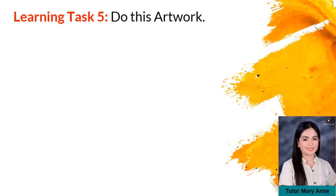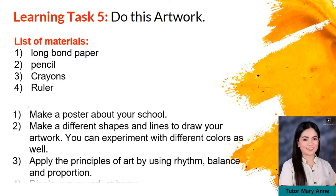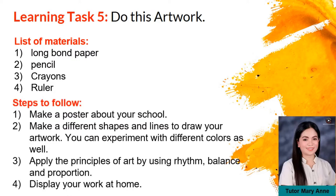For learning task 5, do this artwork. Here is the list of materials: long bond paper, pencil, crayons, and ruler. We have 4 steps to follow. Number 1 — make a poster about your school. Number 2 — make different shapes and lines to draw your artwork; you can experiment with different colors as well. Number 3 — apply the principles of art by using rhythm, balance, and proportion. Number 4 — display your work at home.